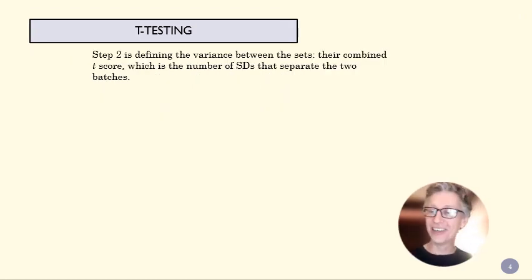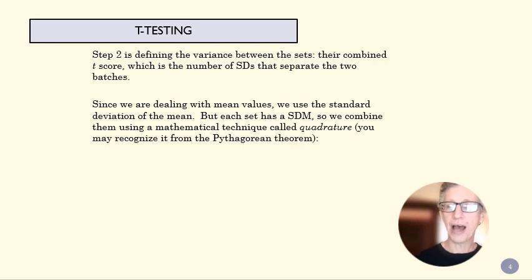So now we found the acceptable variance. Now we have to find what the actual variance is. And so just like with the outliers, we're going to find how many standard deviations separate our two sets. And in this case, they are two data sets, not a data set and a single point. Because of that, this is a little bit more complicated. Because there are two data sets with multiple points and we're interested in how far apart the means are, we're going to use standard deviation of the mean. So we want to know how many standard deviations of the mean they are apart from each other.